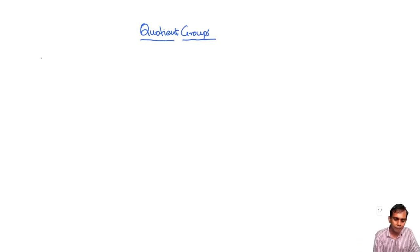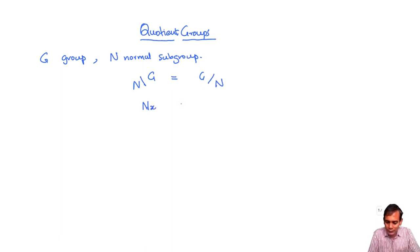Given a group G and a normal subgroup N, we have seen that the left cosets and right cosets of N are the same. If you take a right coset NX, this is the same as X times X inverse NX. But X inverse NX is equal to N, so this is equal to XN. Every left coset is a right coset and vice versa.